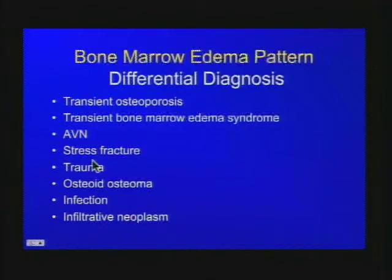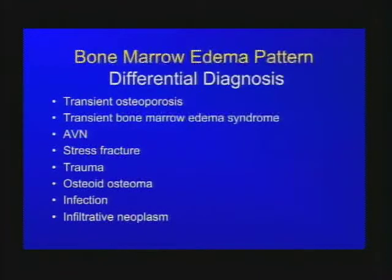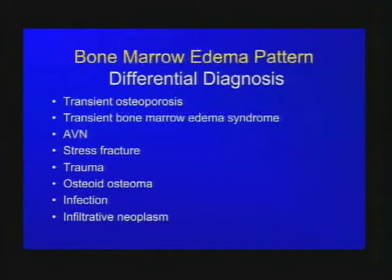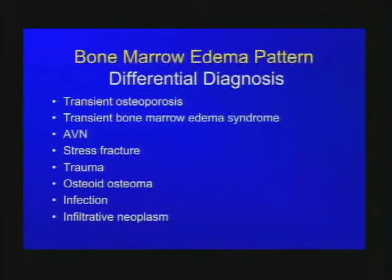Avascular necrosis could also look like this — usually you see a line, but it's definitely in the differential. Stress fractures in the femoral head look just like AVN. Contusion is in the differential if there was recent trauma. In patients under 30 with edema pattern in the femoral neck, think osteoid osteoma — work it up with thin-section CT or bone scan to find the nidus. Infection can also look like this, as can infiltrative neoplasms such as leukemia.